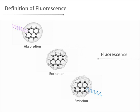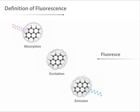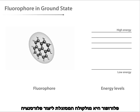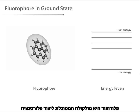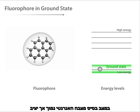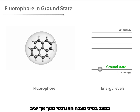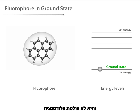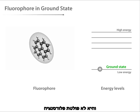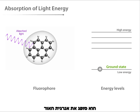To fluoresce means to emit light via this process. A fluorophore is a molecule that is capable of fluorescing. In its ground state, the fluorophore molecule is in a relatively low energy, stable configuration, and it does not fluoresce. When light from an external source hits a fluorophore molecule, the molecule can absorb the light energy.